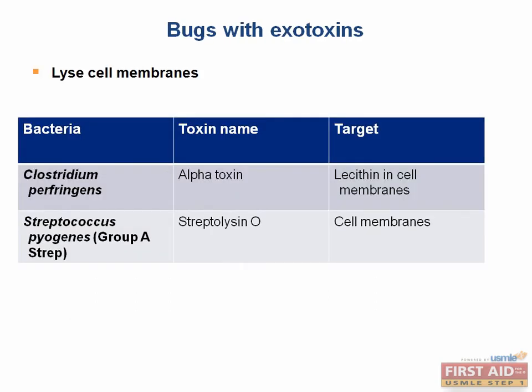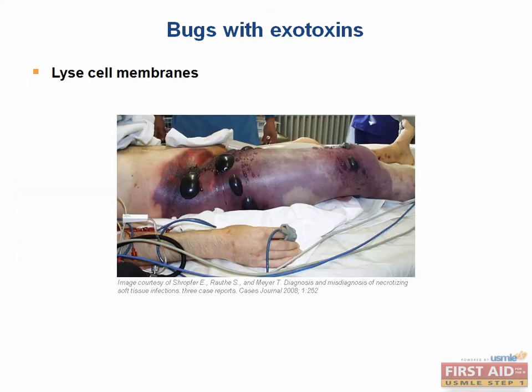Let's discuss toxins that lyse cell membranes. Clostridium perfringens produces alpha toxin, which is a lecithinase. Lecithin is a lipid found in the outer cell membranes of all human cells. Alpha toxin can therefore necrotize tissue and destroy blood vessels by cleaving cellular membranes. C. perfringens can cause gas gangrene, so you might see free air within the tissue on imaging.